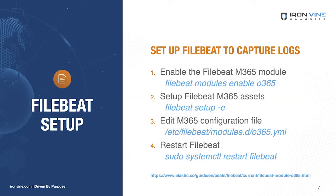Next, let's set up FileBeat. We'll assume that you already have FileBeat installed on the system. If not, first download from Elastic and install it using Elastic's Quick Start Guide. Note that although Microsoft has since rebranded Office 365 to Microsoft 365, at the time of this talk, Elastic still refers to this module as the Office 365 module. As a user with appropriate permissions, run the command `filebeat modules enable O365` to enable the 365 module, then run `filebeat setup -e` to set up the 365 assets.